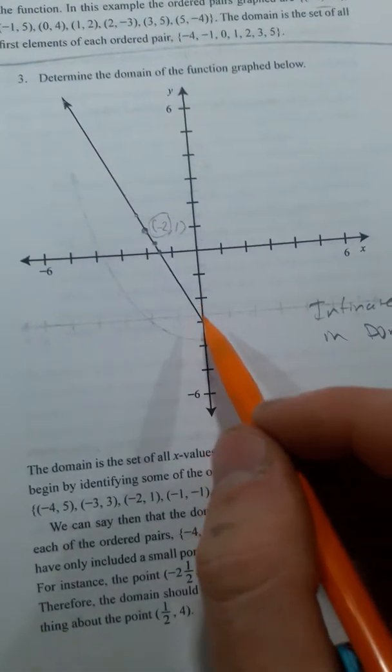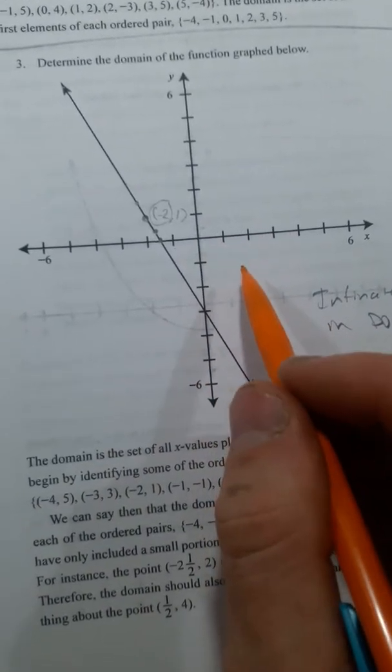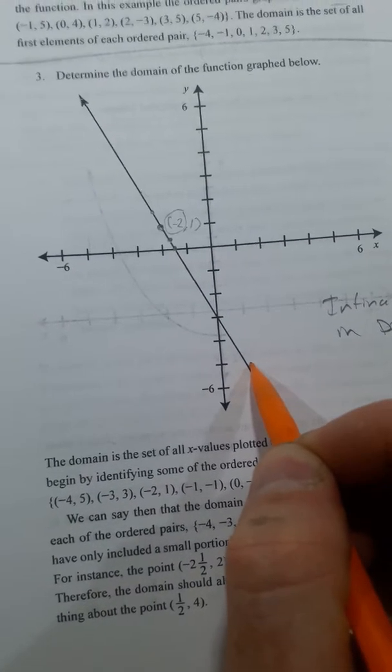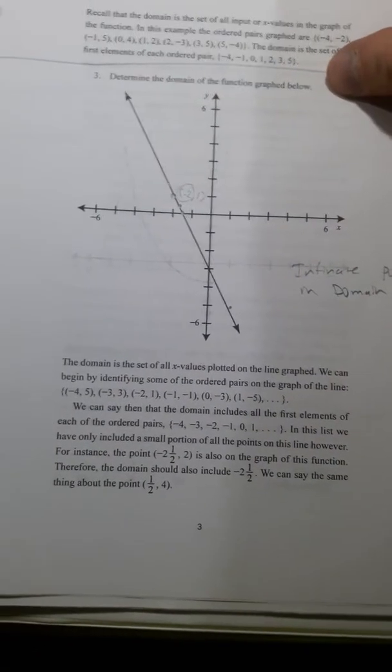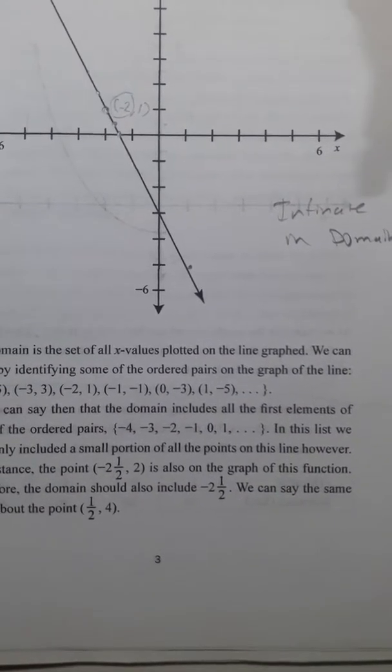It could have a positive 1.5. It could be any number. So the domain is infinite, which is all real numbers, negative and positive.